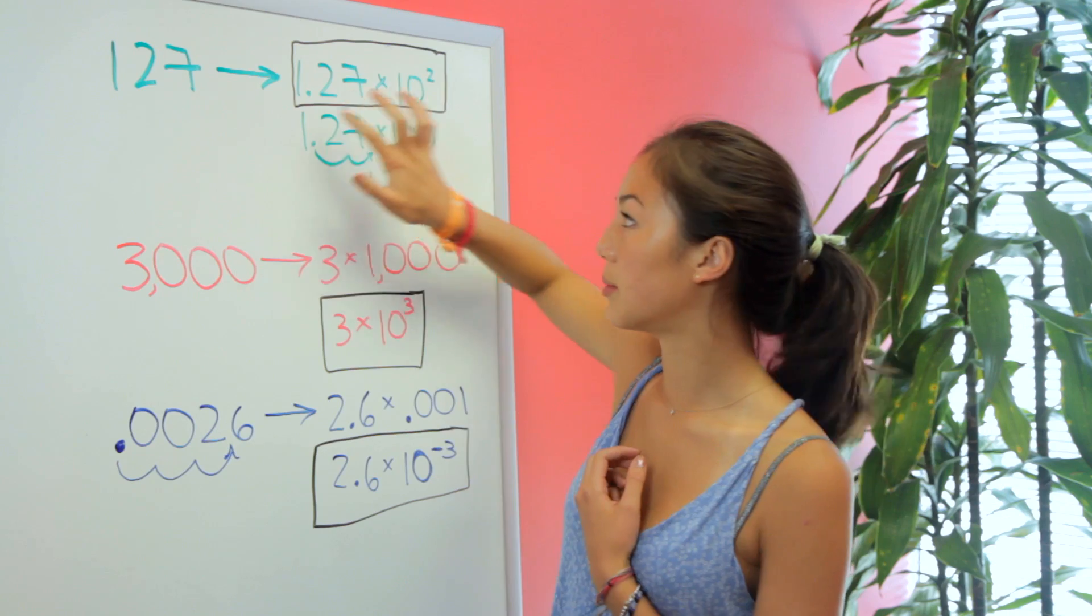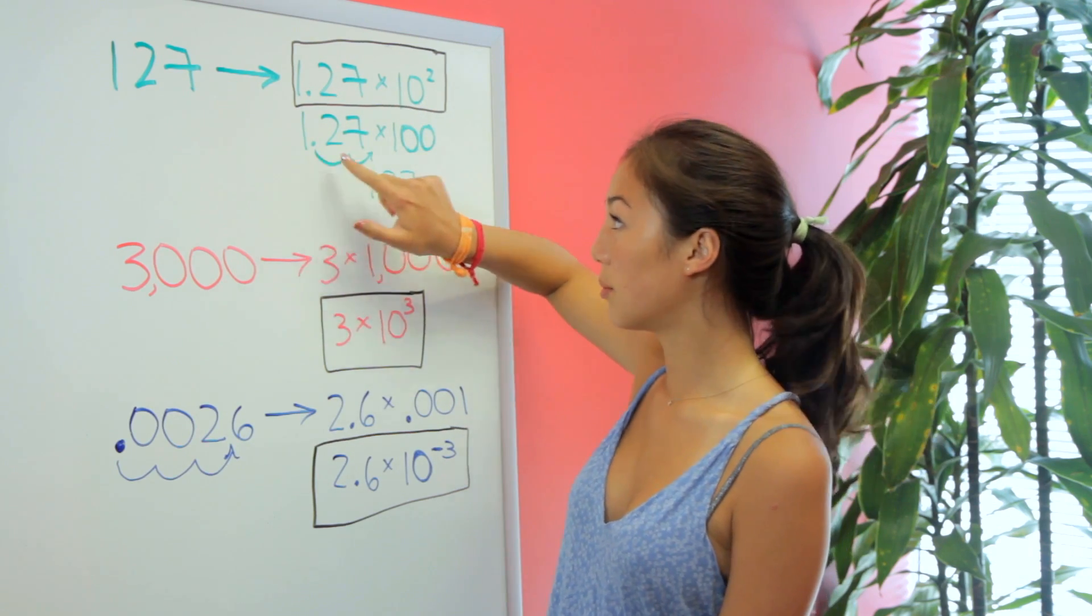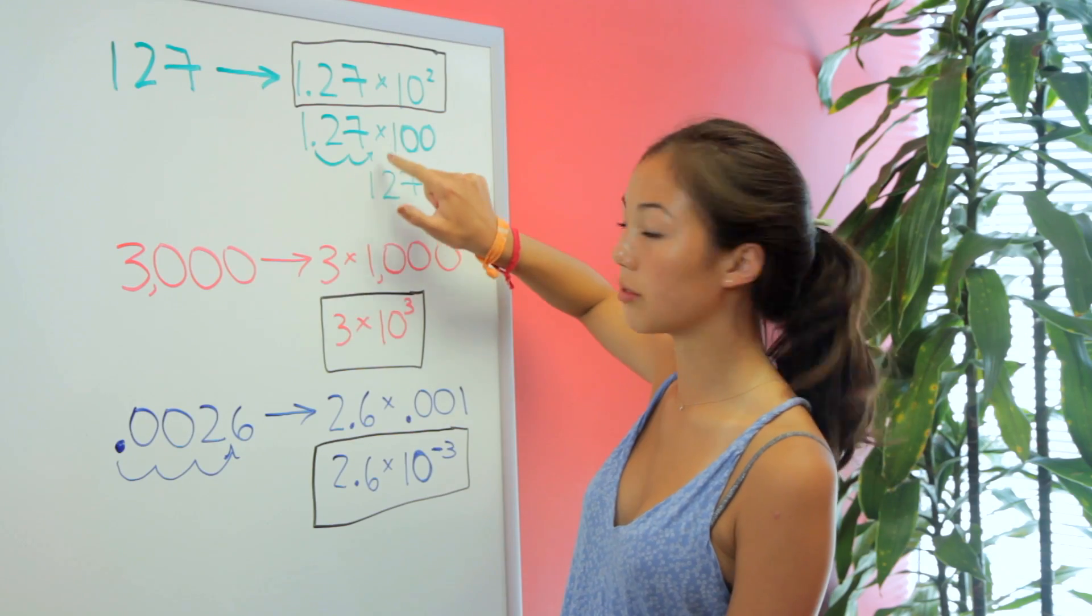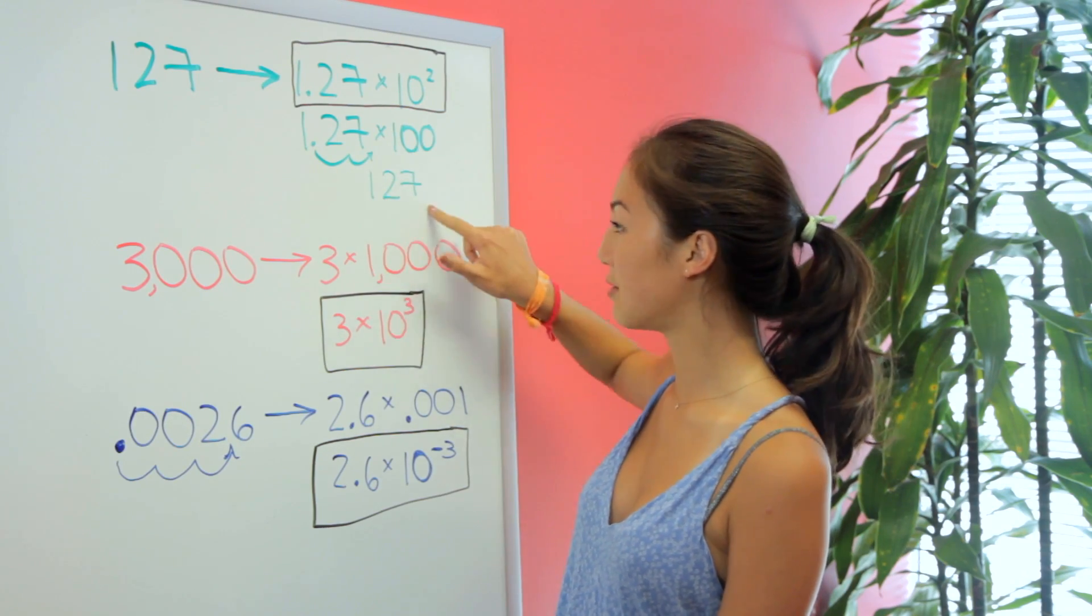So to prove that this really is the same number, here I wrote 1.27 times 100, 10 squared. And this times 100, we move the decimal over twice, and we get that this is in fact 127.